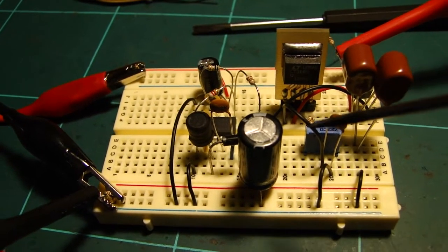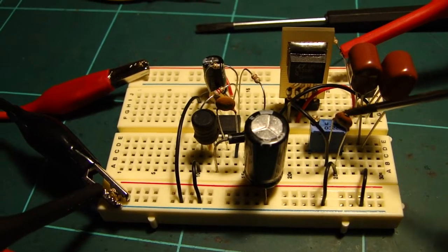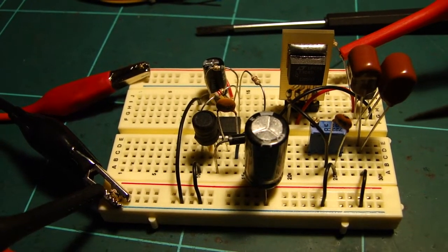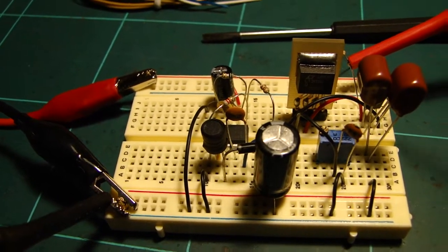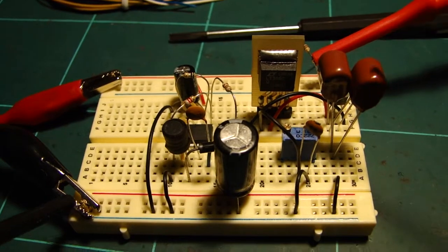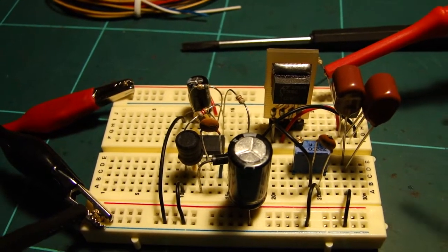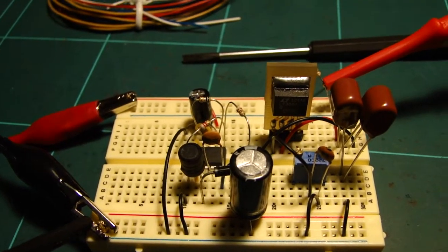So, LT3080, voltage set resistor. Noise cap to stop the set pin picking up rubbish. I don't have a 2.2 microfarad output ceramic so I've just used two 1.1s.